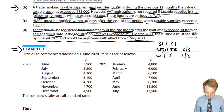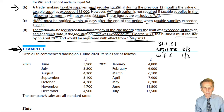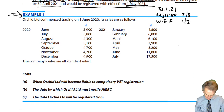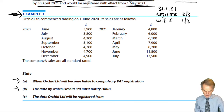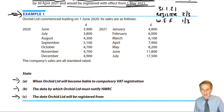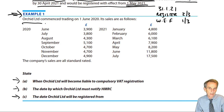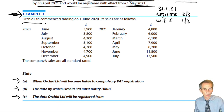That homework question is a little bit longer, where the levels of taxable supplies each month are somewhat lower. You've got to state when ORCID Limited will become liable to compulsory VAT registration, the date by which ORCID must notify HMRC, and the date that ORCID Limited will be registered with effect from. Whether you're talking about an unincorporated business or a company like ORCID Limited, we are talking about a trading business, so the VAT registration rules apply irrespective of whatever form of business medium you've chosen.